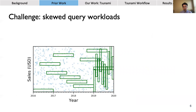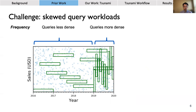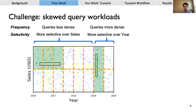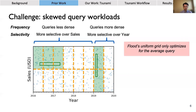Flood does have practical limitations, which motivated us to create Tsunami. One limitation is that Flood can perform poorly if the query workload is skewed. For example, with data showing year on the x-axis and sales on the y-axis, a workload is skewed in two ways: first, in terms of frequency, where queries appear more densely after 2019 than before — a common temporal skewness since you're more likely to query recent data. Second, the workload is also skewed in terms of filter selectivity, where the per-dimension filter selectivity of the average query varies across the space. Flood would create a grid that doesn't perform well, with a lot of extra scanning outside the query rectangles, because its single uniform grid can only optimize for the average query.